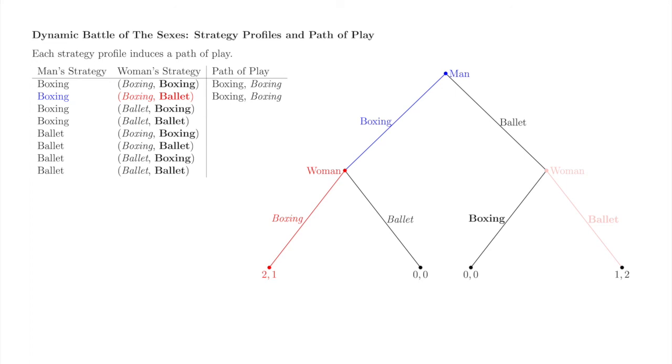The remaining six strategy pairs and the induced paths of play are listed here. To check your understanding, take a few minutes to verify that this table is correct. Thanks so much for watching this video about actions, strategies, and paths of play. In the next video, we'll introduce Selten's chain store paradox and begin our discussion of credibility and dynamic games.